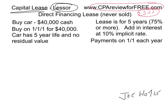The lessor is the person who owns the property; the lessee is the person who uses the property. When you have a capital lease for a lessor, it can either be a direct financing lease or a sales-type lease. In this lesson we're going to talk about direct financing leases. It's a direct financing lease if the company is not a dealer or manufacturer — they are not in the business of selling this item, only leasing it. Therefore all of the profits will be interest.